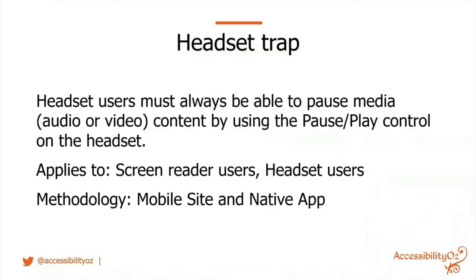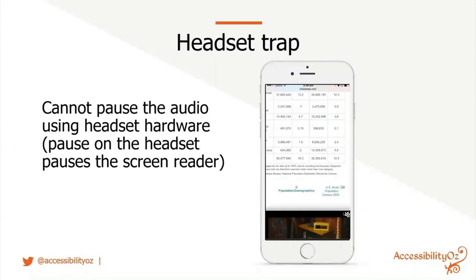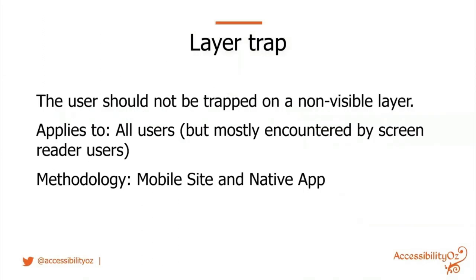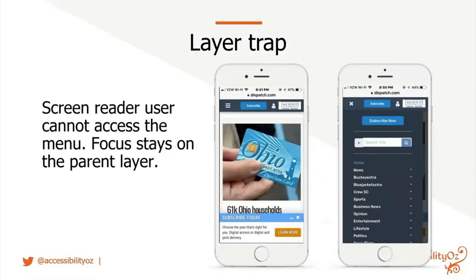There's also a headset trap: headset users must always be able to pause media audio or video by using the pause/play control on their headset. On one web page, a video pops up and plays at the bottom — it has a pause icon but you can only access it by tapping; using the headset pause button pauses the screen reader instead. Finally, the layer trap: users should not be trapped on a non-visible layer. On dispatch.com, opening the hamburger menu traps the screen reader on the underlying home-page layer, so it can't access any menu items.